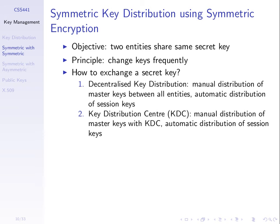We'll go through two approaches in the next few slides. First, a decentralized key distribution where we manually exchange master keys — a human programs in master keys once. When we want to encrypt data, we don't use the master key directly; instead we generate a session key and exchange that automatically across the network, encrypted using the master key. When we need to change keys, we change the session key automatically without human intervention.